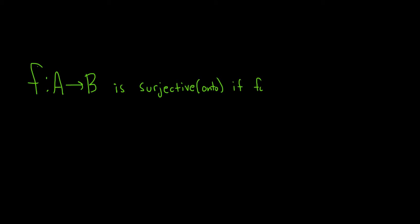First I'll write it in words. If for all little b in capital B, so for every little b in the codomain, there exists little a in capital A such that f of a is equal to little b.